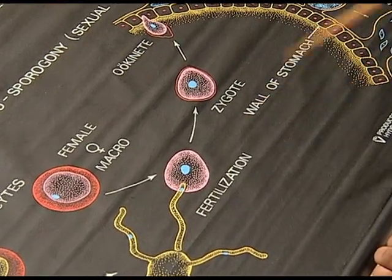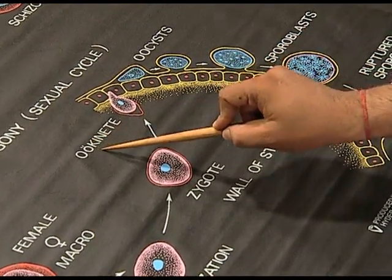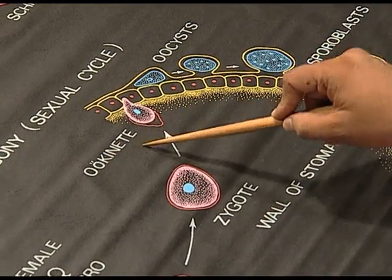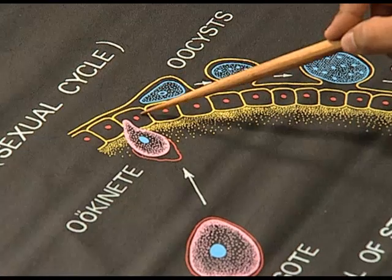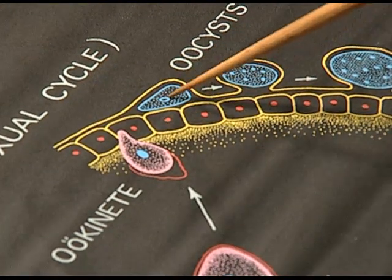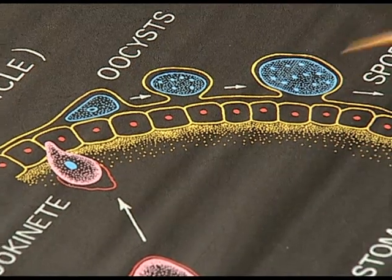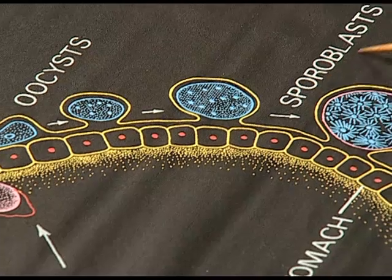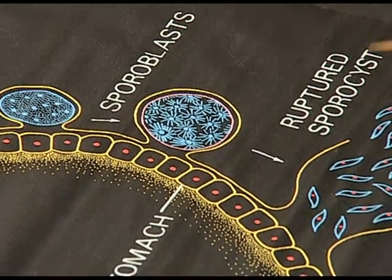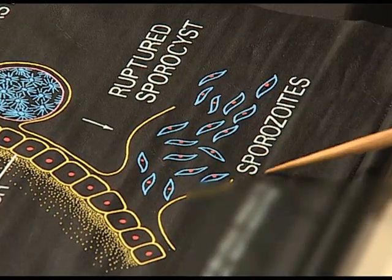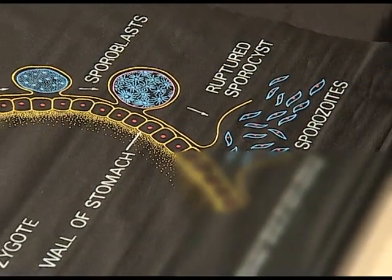This zygote after further development will form an ookinete. The ookinete — kinete being related to kinesis — is the stage that can move inside the body. It will go to the alimentary canal and settle in the space between the wall and membrane of the alimentary canal, where it will grow further. After mitotic division, it will form a sporoblast. When the carrying capacity is exceeded, the sporoblast will rupture and sporozoites will be liberated inside the body cavity. These sporozoites travel through the body cavity to reach the salivary gland of the mosquito.